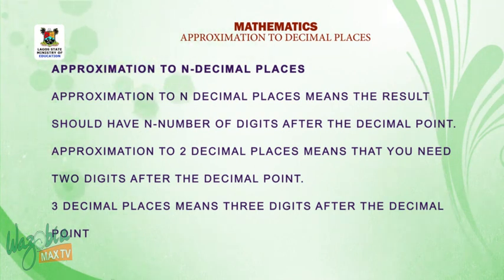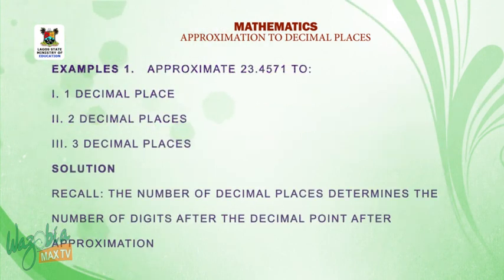Approximation to n decimal places means the result should have n number of digits after the decimal point. So, approximation to 2 decimal places means you need two digits after the decimal point. And approximation to three decimal places means your result should have three digits after the decimal point. Now let us take a look at some examples. The first example says: Approximate 23.4571 to 1 decimal place, 2 decimal places, 3 decimal places.